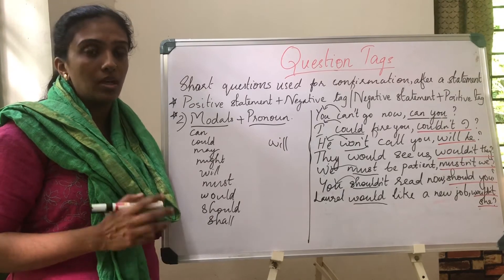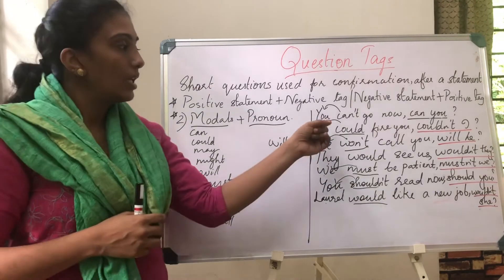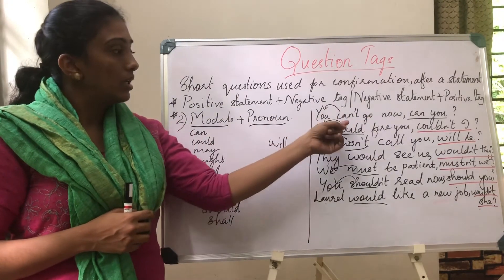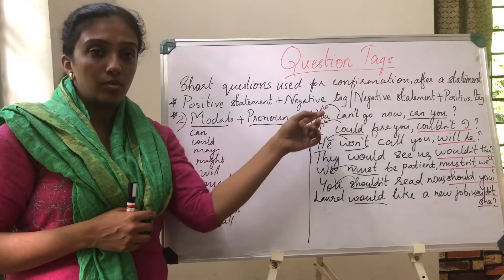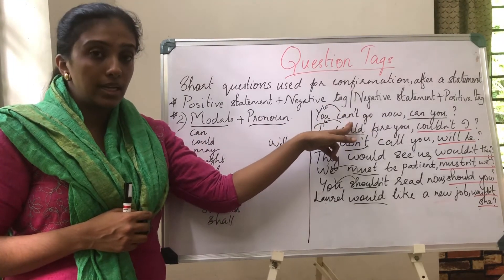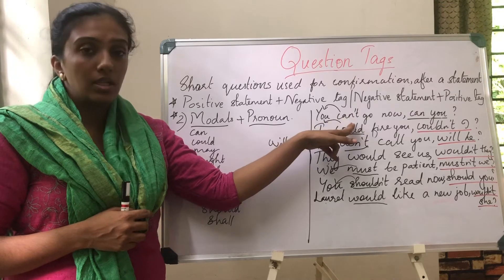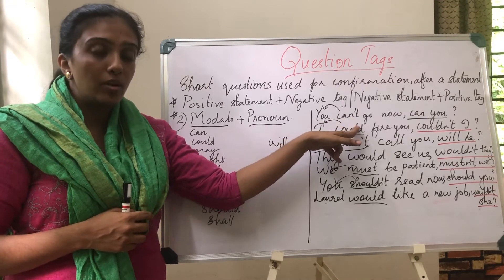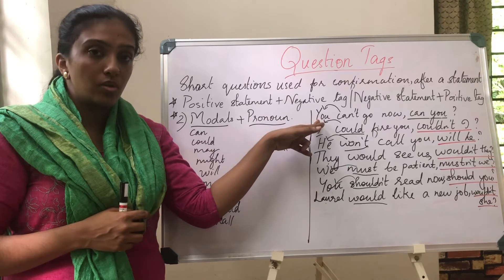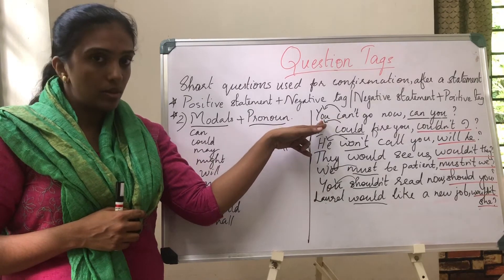Moving into our examples. 'You can't go now.' Can't is the modal — it's a negative statement. So you take 'can', drop the 'not', and then take the pronoun. The tag becomes: can you.